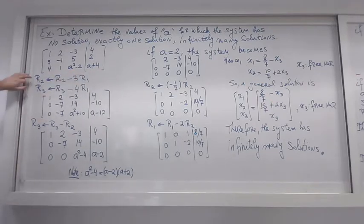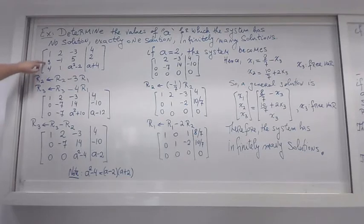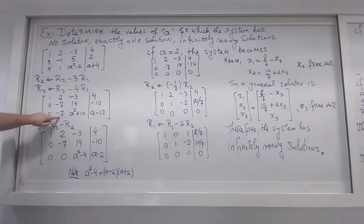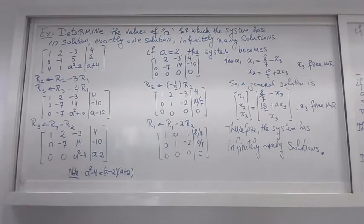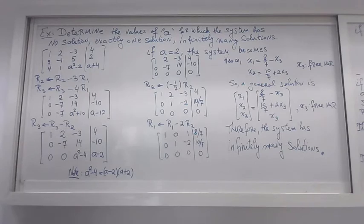These are the elementary operations we perform to produce zeros below the leading entry. After further operations to produce a zero below the next leading entry, we have a system where we recognize that a² - 4 factors as (a - 2)(a + 2), which will be helpful.